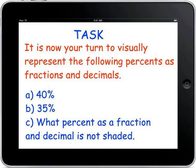Finally, here is your task for this evening. It is now your turn to visually represent the following percentages as fractions and decimals. A, 40%, B, 35%, and C, what percent as a fraction and a decimal is not shaded? Remember to use a hundredth grid, and we will discuss your results in class tomorrow. Rockin' Ratios out.